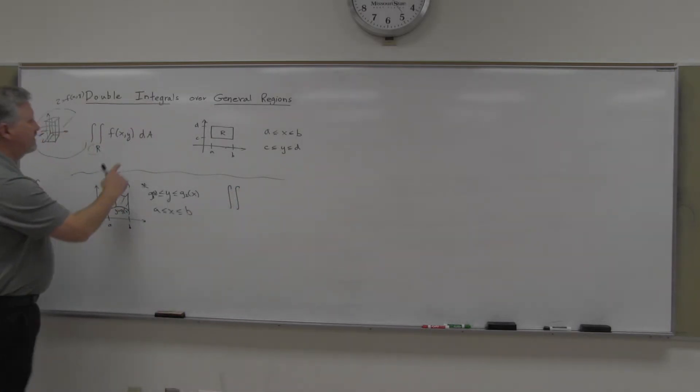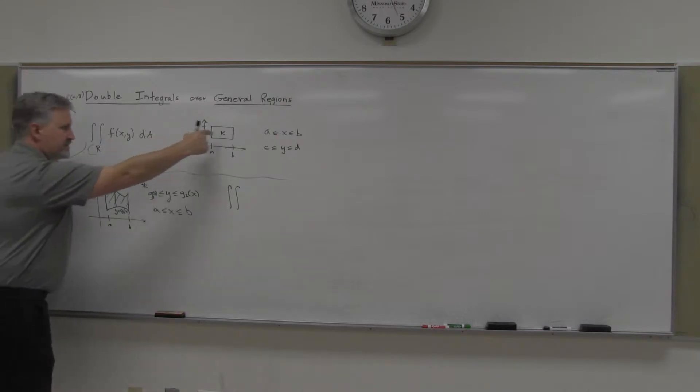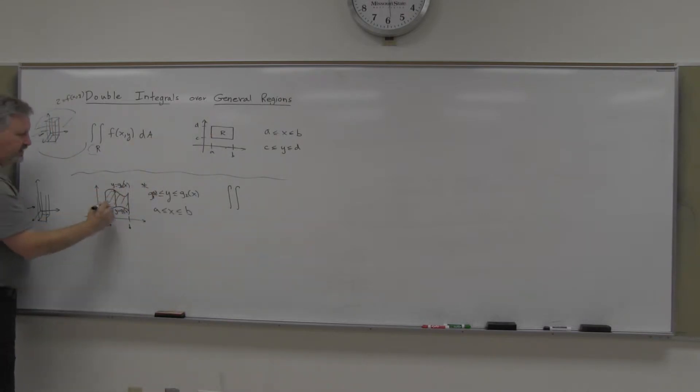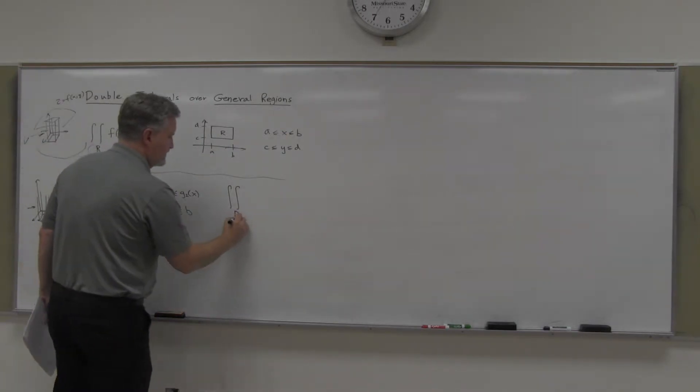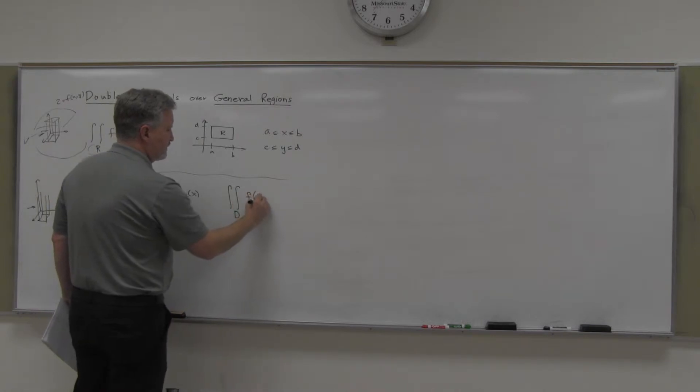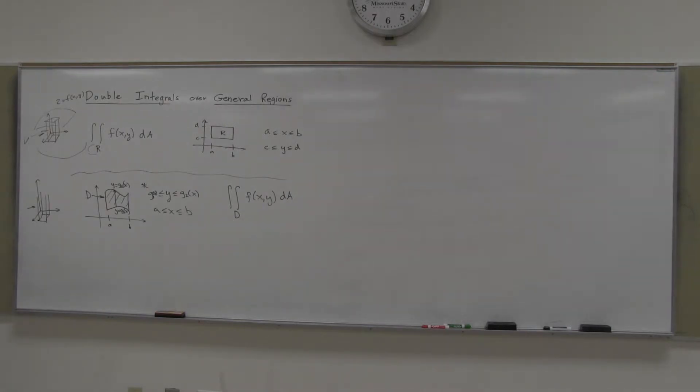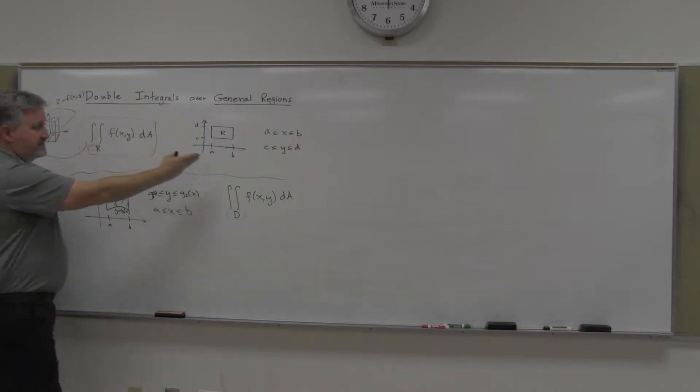So what they're going to call, instead of calling this region R, this is not a rectangular region. So they're going to call it D or something like that, region D. So we're going to do the double integral over region D of our two-variable function. As far as notation-wise, all that's really changing here is we're calling it a region D instead of a region R, because it's not a rectangle. That's really what's going to change there. But when we actually go to evaluate, I just have to decide, well, do I want to do the Y's first or the X's first?